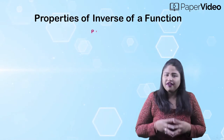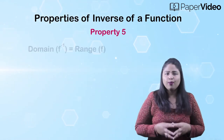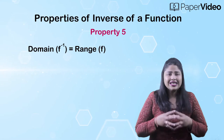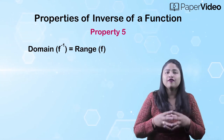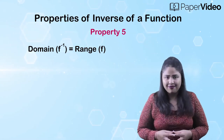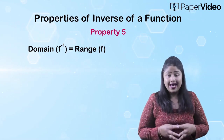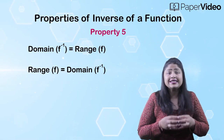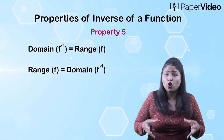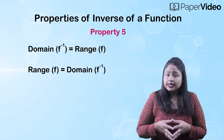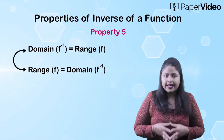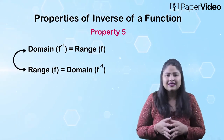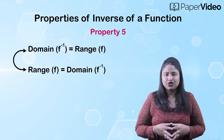According to the fifth property, the domain of the function f inverse is the same as the range of the function f, and the range of the function f inverse is the same as the domain of the function f. This means that the domain and range get reversed under the inverse function.